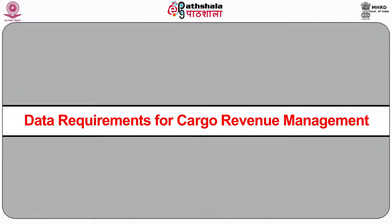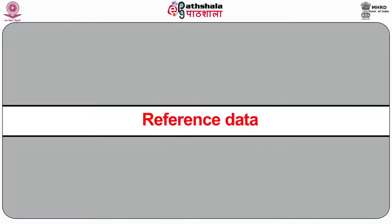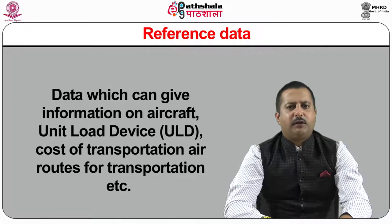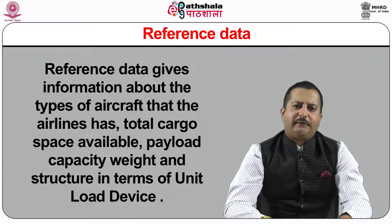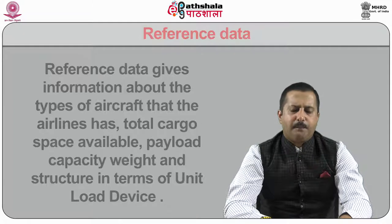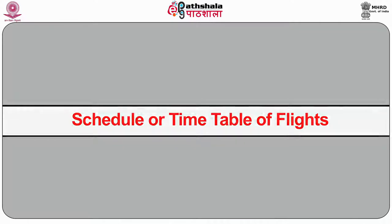Data requirements for cargo revenue management: following types of data are required for successful revenue management of air cargo. Reference data gives information about the types of aircraft the airline has, total cargo space available, payload capacity weight, and structure in terms of unit load device (ULD). Schedule or timetable of flights is of three types: seasonal schedule available at the start of every season from the flight scheduling system, listing all information about flights including flight number, origin, destination, operational days, and equipment. A regularly updated schedule overrules the previously existing schedule.